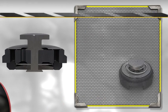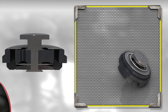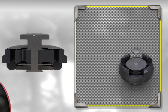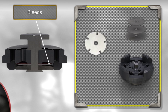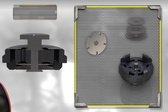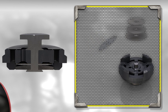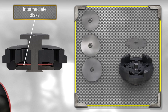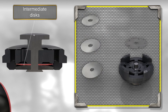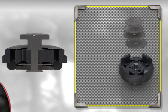In twin tube shock absorbers we also find a compression valve at the base of the pressure tube. The configuration of this valve is similar to the piston valve but inverted. It is also smaller in size because its design takes into account the dampening force provided by the coil springs during compression and other elastic elements of the suspension system.